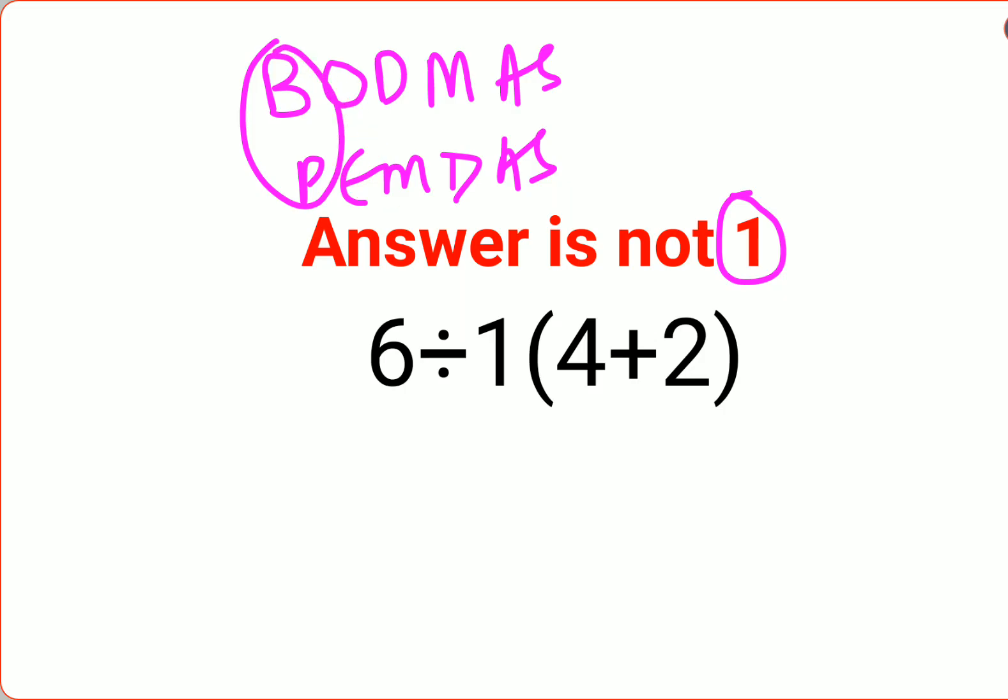Since there is no sign between 1 and the bracket, it means multiplication. 4 plus 2 in the bracket gets you 6. At this point, a lot of people think this is so easy: 6 divided by 1 multiplied by 6 is 6, answer is 1. No.